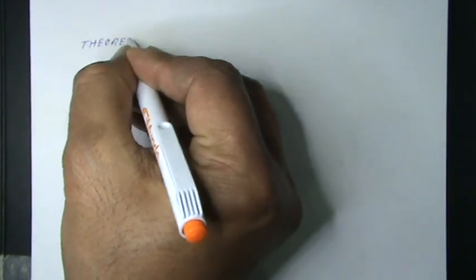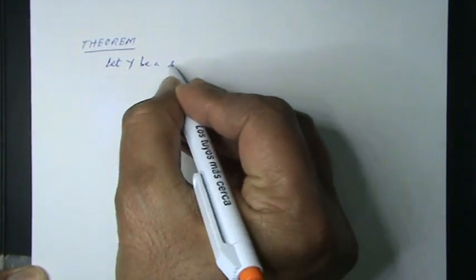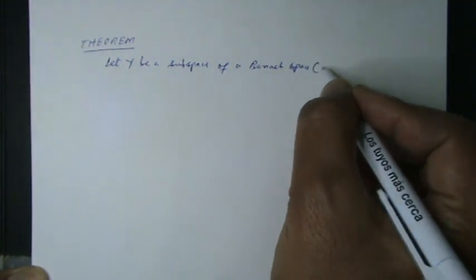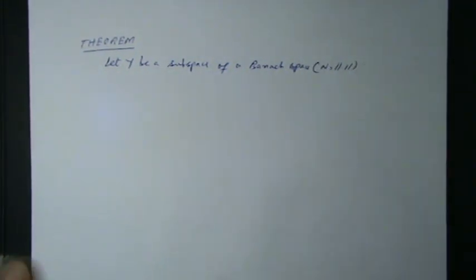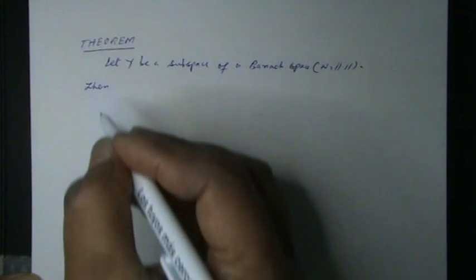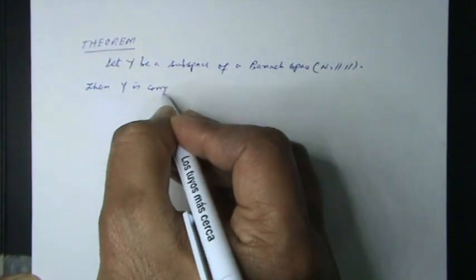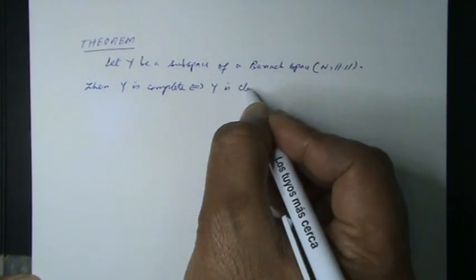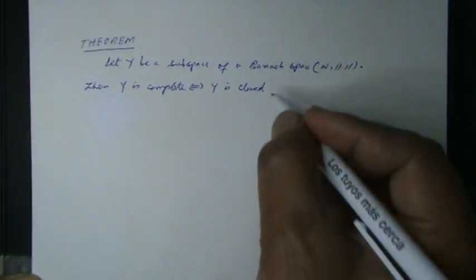Theorem: Let Y be a subspace of a Banach space N. Then subspace Y is complete if and only if subspace Y is closed in a Banach space N.